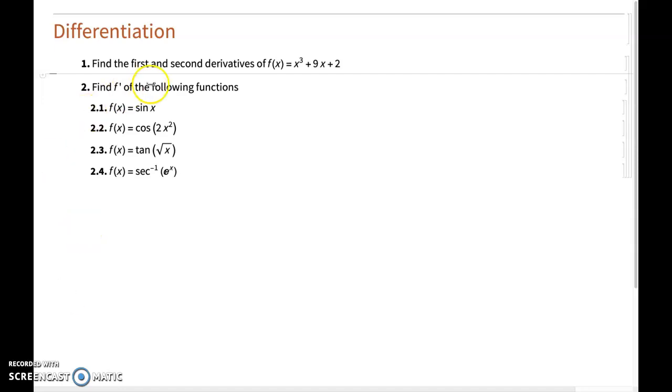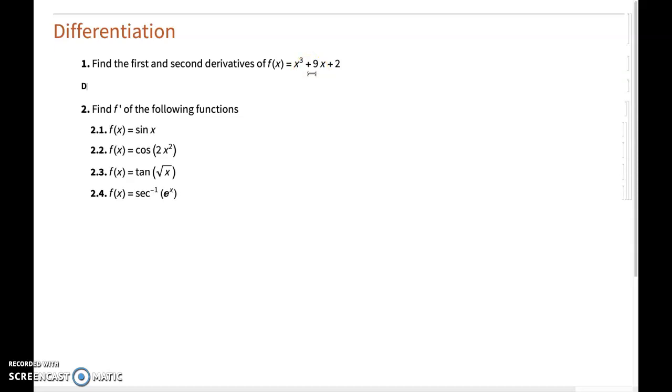The first one is where we're required to find both the first and the second derivatives of this simple polynomial. And the Mathematica command to find derivatives of functions is simply D. So you write D, capital letter, and then you have your square brackets indicating that this is a command of Mathematica.